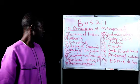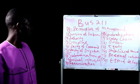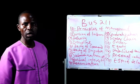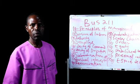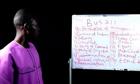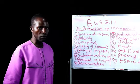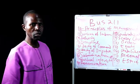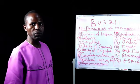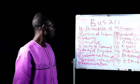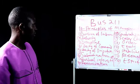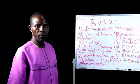We also have the principle of discipline. Discipline has to do with ensuring that everything done in the organization is according to the rules and regulations stipulated by the law guiding the organization. If an employee violates those rules and regulations, such an employee can be disciplined. There are different types of discipline — minor discipline and major discipline — depending on the gravity of the offense committed.